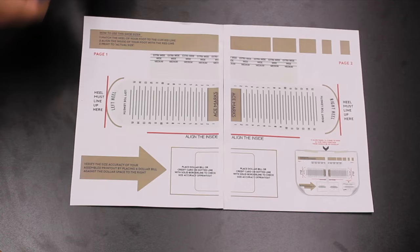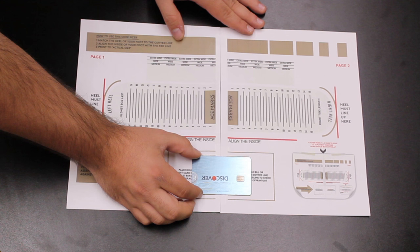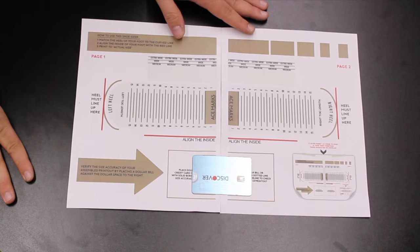If you want to check to make sure the PDF is lined up correctly, you can stick a credit card inside this measure. It's going to line up perfectly with the credit card. You can also use a dollar bill, but that has to be a United States dollar bill. Now that we see the credit card line up correctly, this is ready to measure our foot.